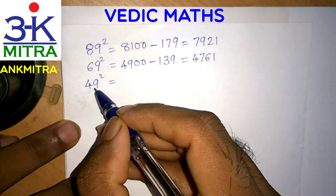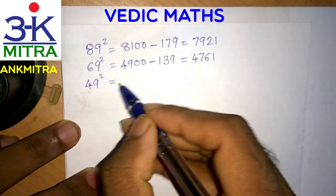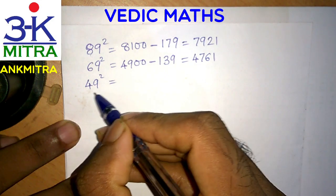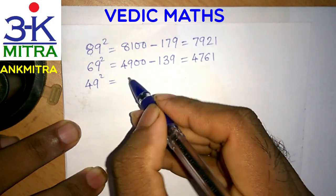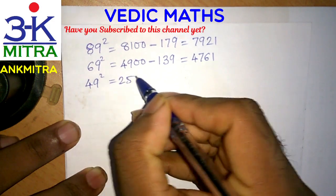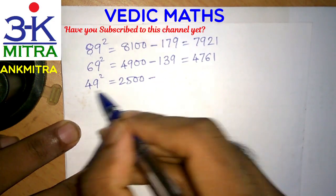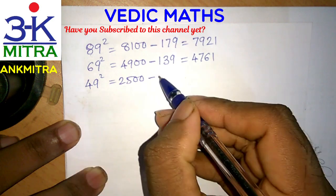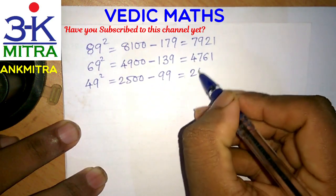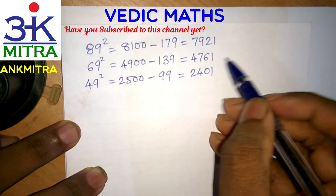Now let's look at the square of 49. The first step is to write down the square of the nearest round number, which is 50. The square of 50 is 2500. Then subtract the sum of 50 and 49, that is 99, from this, and we get the answer as 2401. Isn't this easy?